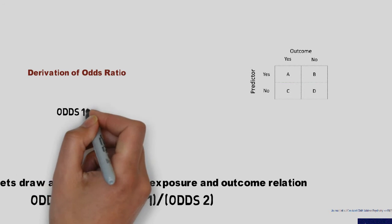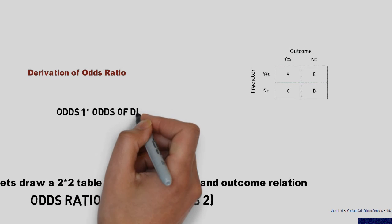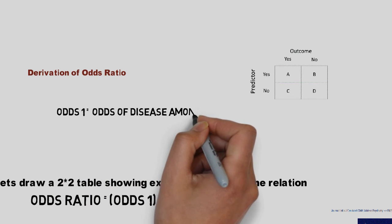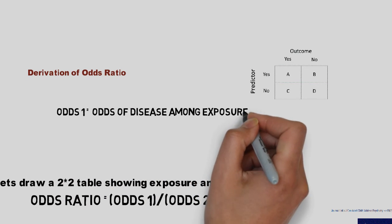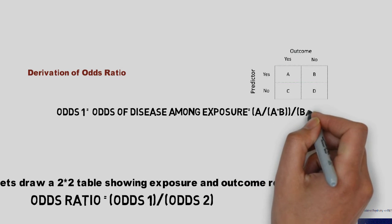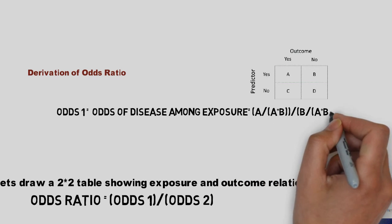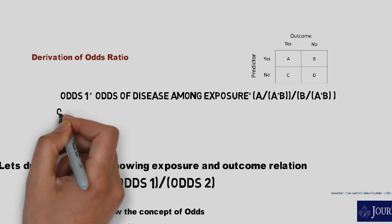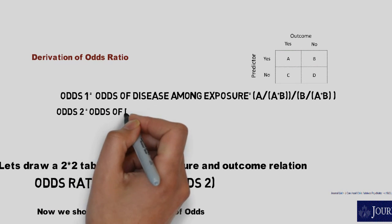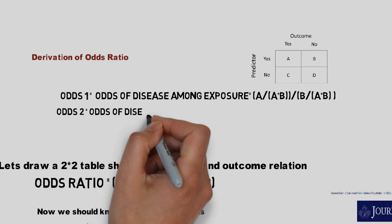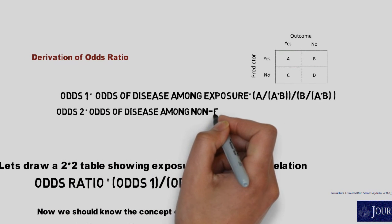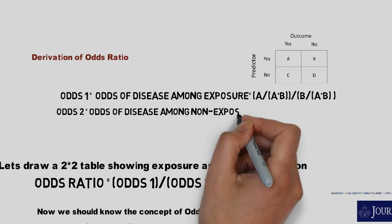In the same table, Odds1 becomes the odds of disease among the exposed, and Odds2 becomes the odds of disease among the non-exposed. Odds of disease among the exposed is (A / (A+B)) divided by (B / (A+B)), whereas odds of disease among non-exposed is (C / (C+D)) divided by (D / (C+D)).